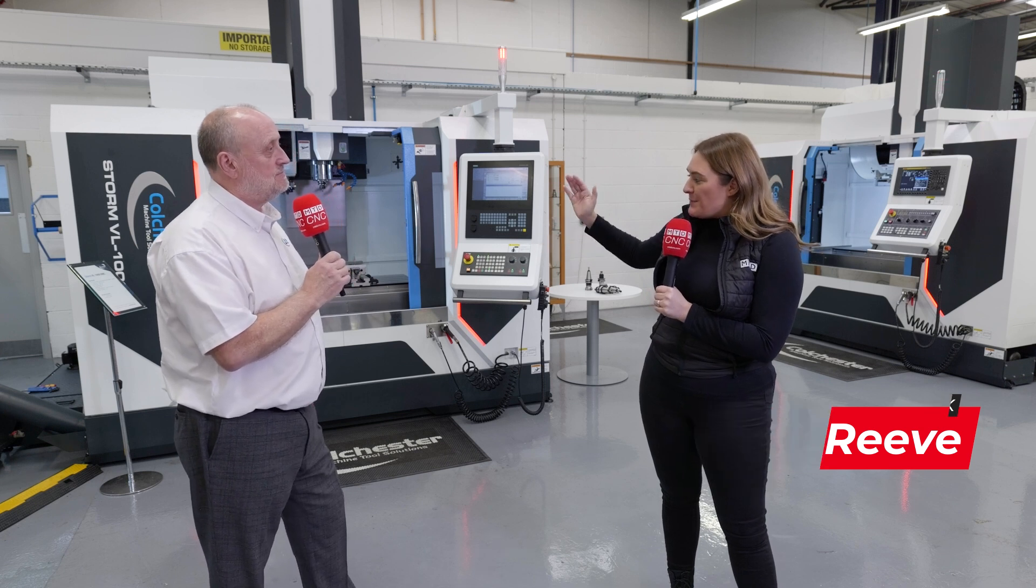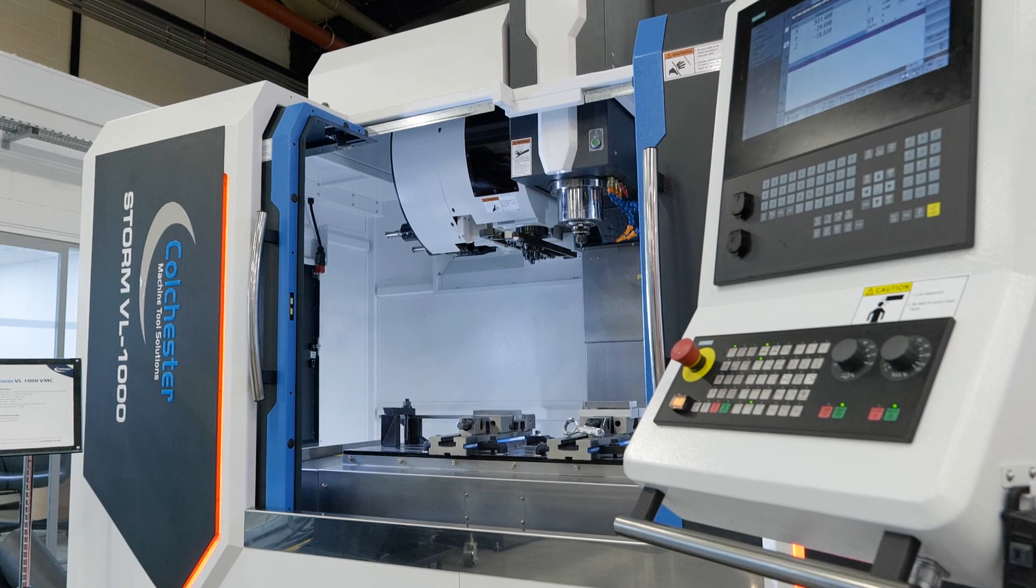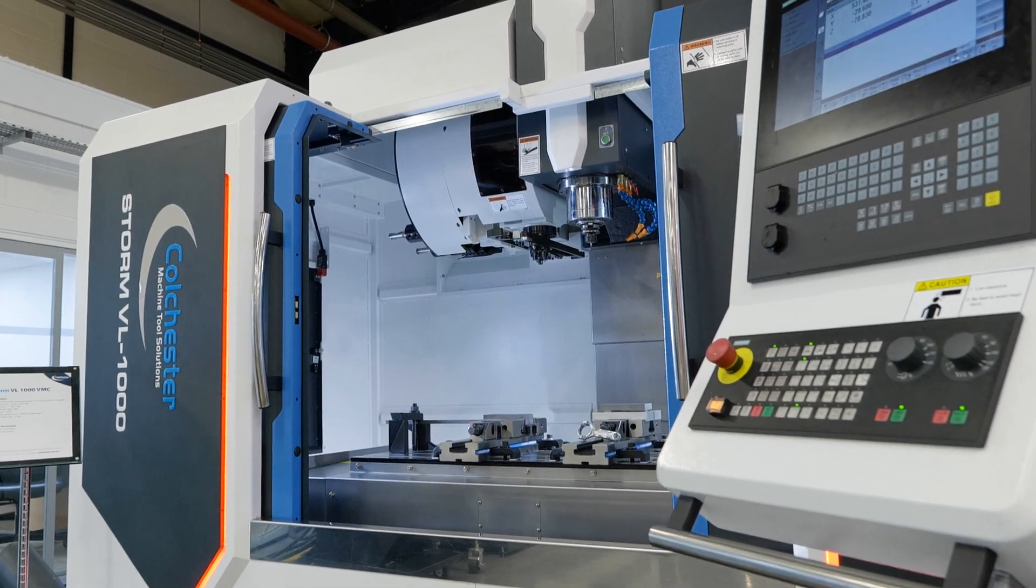Keith, we're stood in front of the Storm VL1000. What does having milling machines mean to Colchester? It gives us a one-stop shop. People know us for turning, conventional and CNC with the Tornado range. We now have the Storm VMC range, so we can offer a customer a complete solution.